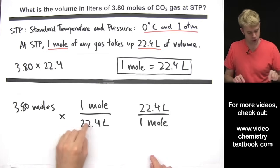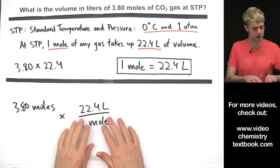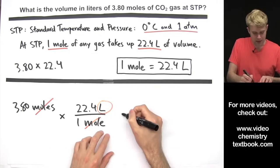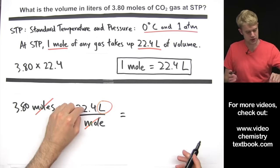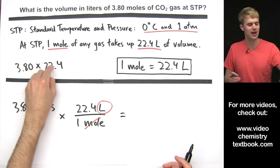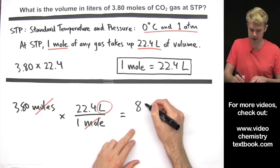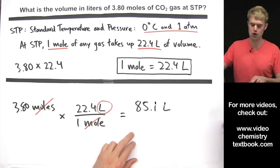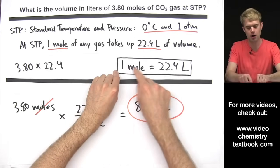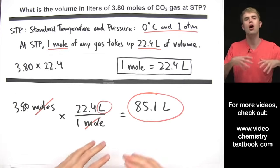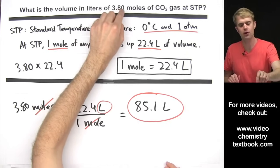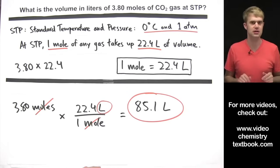We use the conversion factor with moles on the bottom. Moles on top cancels with moles on the bottom, leaving us with liters. The math is 3.80 times 22.4 divided by 1. Our final answer is 85.1 liters. We round to three significant figures because there are three significant figures in 3.80 and in 22.4. The 22.4 L per mole definition has essentially an unlimited number of significant figures, so 85.1 liters is the volume 3.80 moles of CO2 gas would take up at STP.